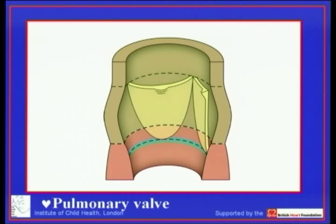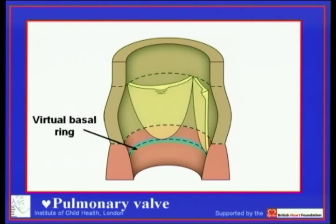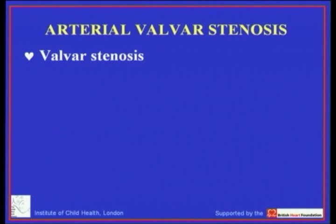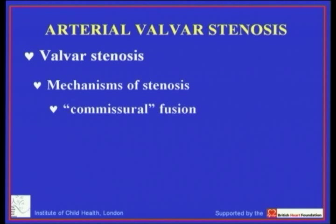You will also recall that the so-called annulus that you measure as echocardiographers is no more than a virtual ring constructed by joining together the movements of the valvar sinuses. Now if we look at valvar stenosis, there are various forms that produce the stenotic arrangement.